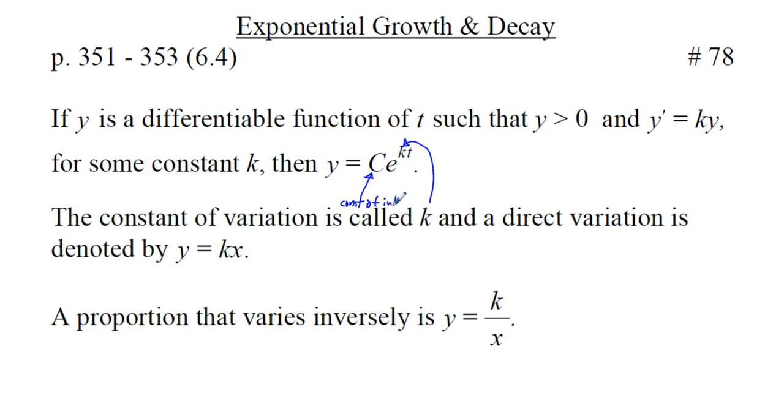And we're going to see where these come from here. If we have y prime equals ky, let's rewrite this as dy/dt equals ky. And if we cross-multiply the dt, we get dy is equal to ky dt. And if we divide by y, we get dy over y equals k dt.